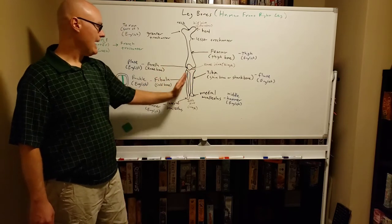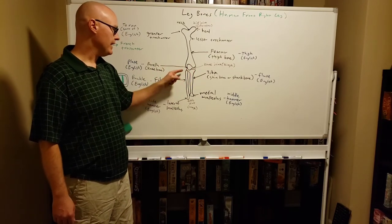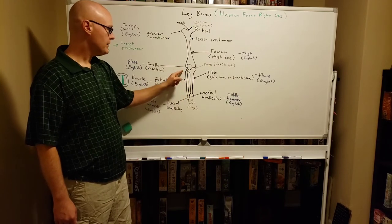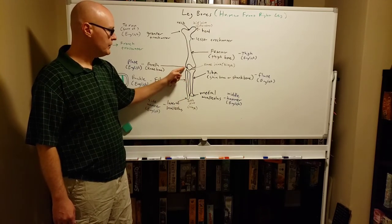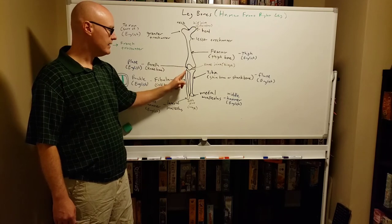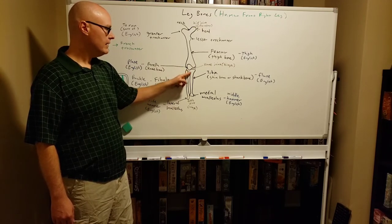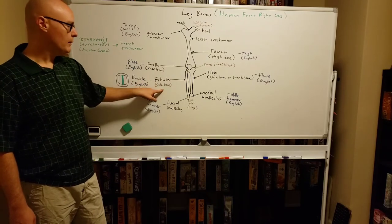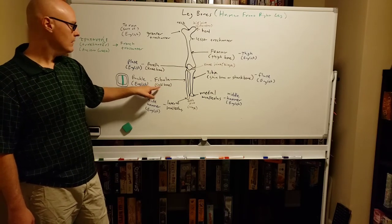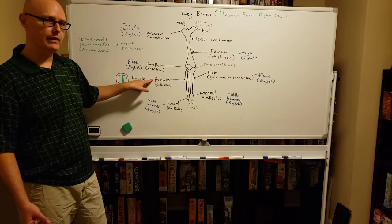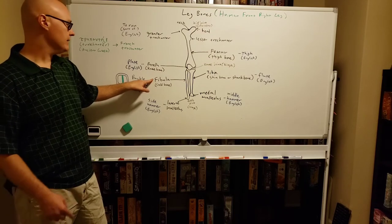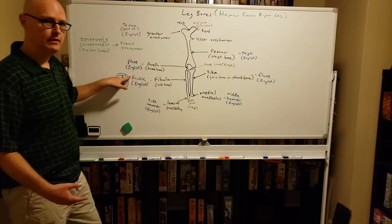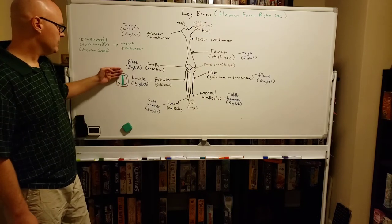On the outside, we have a smaller bone — much, much smaller diameter — which doesn't go all the way up to the knee joint. It is connected to the tibia, and this is called the fibula, or the calf bone. The fibula translates directly from Latin to English as 'buckle' or 'clasp,' something like that.